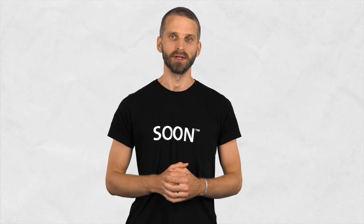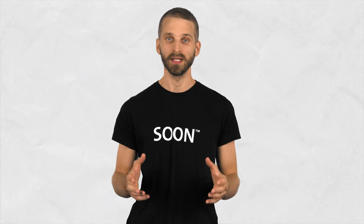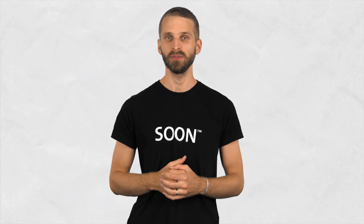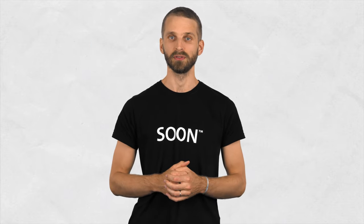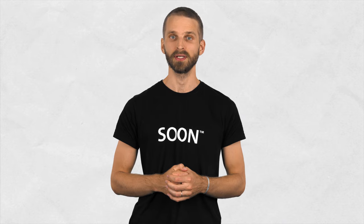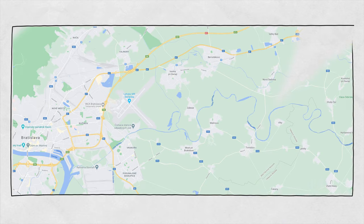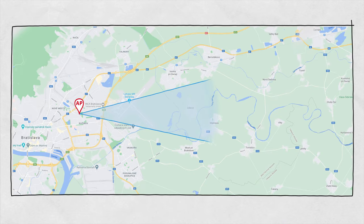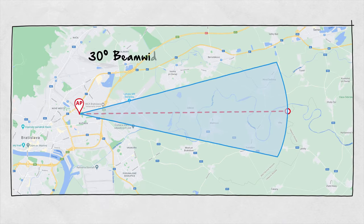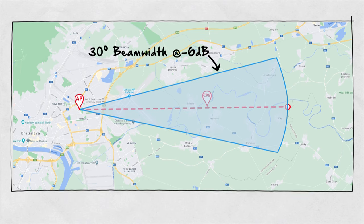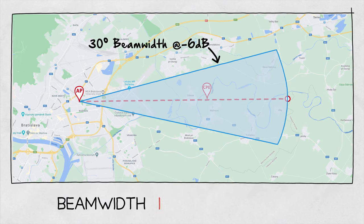When planning a wireless network, there are many online and offline tools that help you visualize how the network coverage will look like. Some of these tools use a section of a circle corresponding to the antenna beamwidth in place of the expected coverage. The truth is, beamwidth is not coverage.